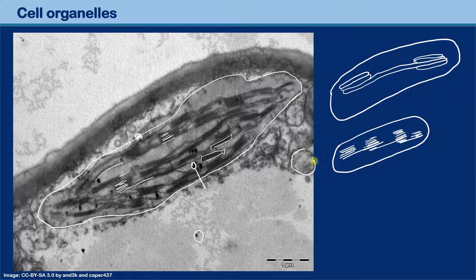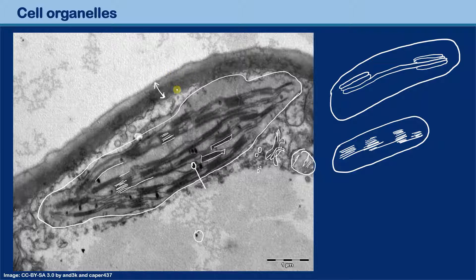Over here is most likely the cytoplasm. This could be a mitochondria — it does look like there are some infoldings. These structures here, with a lot of imagination, could be a Golgi body — a stack of discs — and maybe these are vesicles. Very interesting is this thick structure out here, which is most likely the cell wall. There's a light gray outer part and a dark gray inner part. I'm not sure why the density differs — possibly different density of the cellulose.